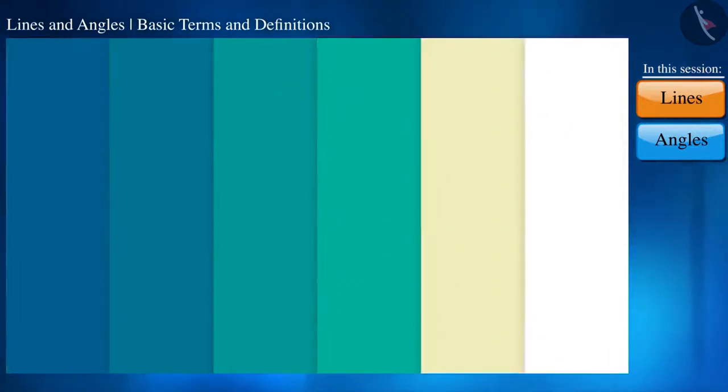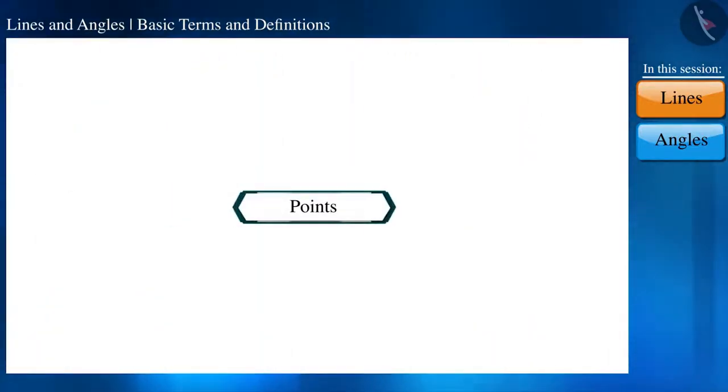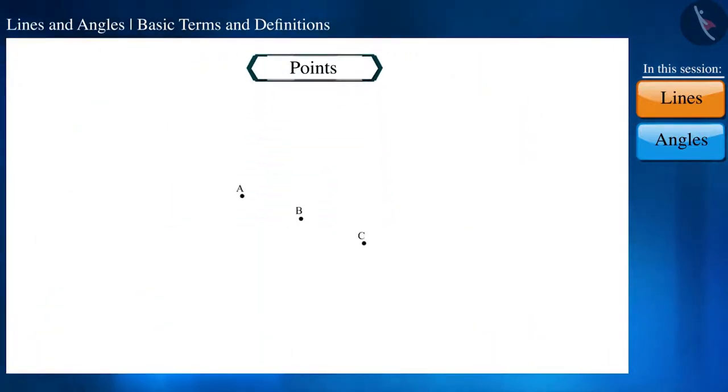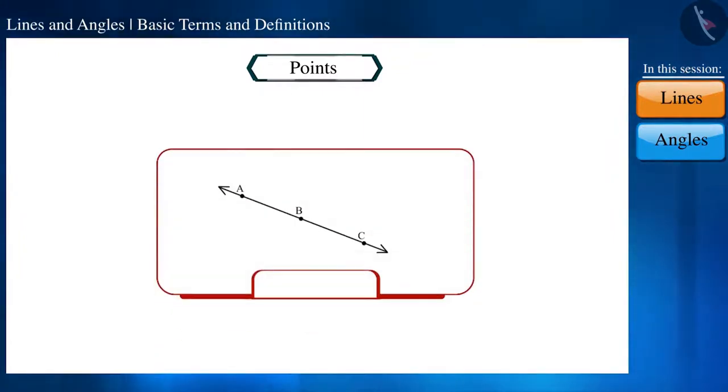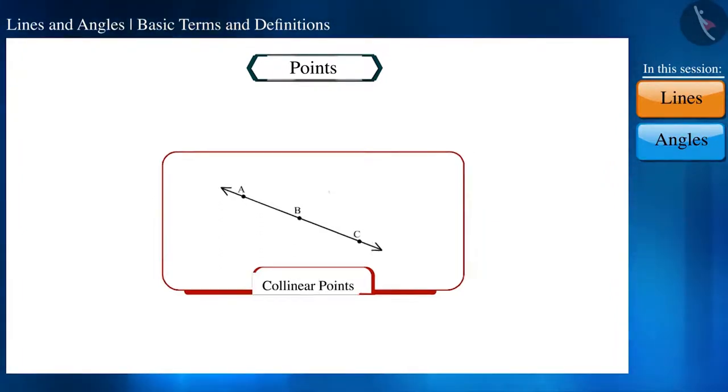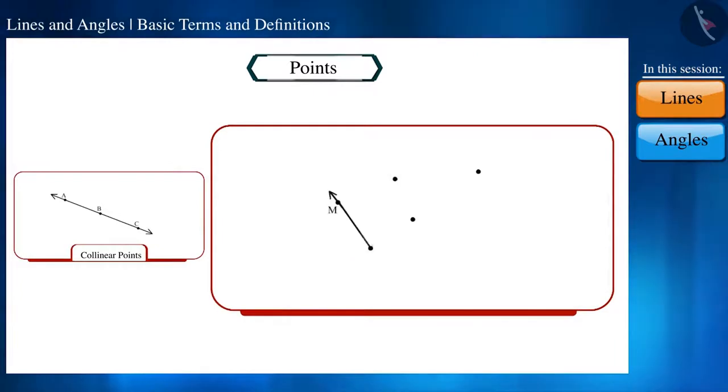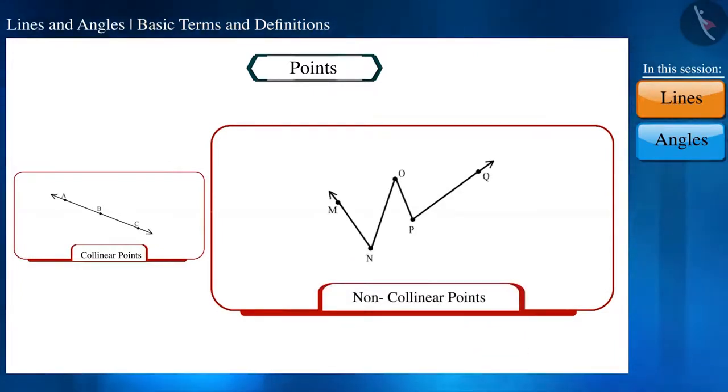Friends, if three or more points are situated on the same line, somewhat like this, then they're called collinear points. If they are not on the same line, they are called non-collinear points.